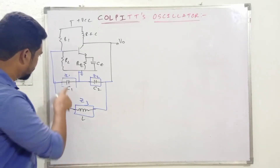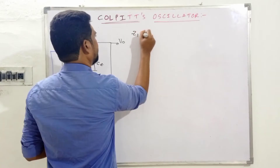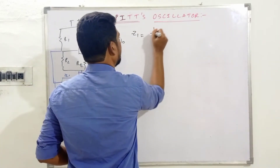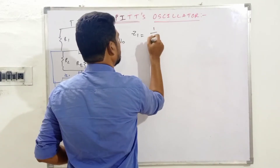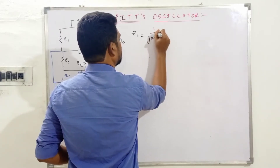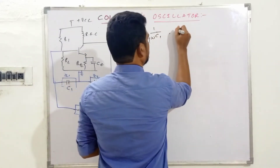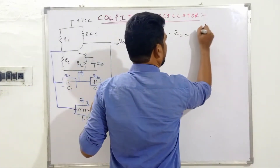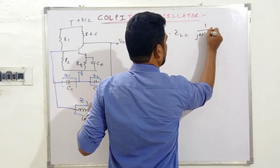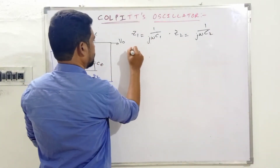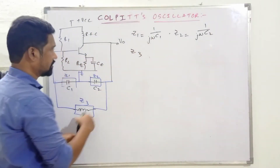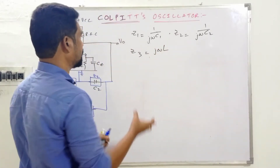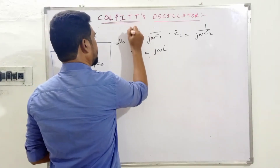Z1 is the impedance offered by capacitor C1, which is 1/(jωC1). Z2 is the impedance offered by capacitor C2, which is 1/(jωC2). And Z3 is the impedance offered by inductor L, which equals jωL. By substituting these into the general expression for LC oscillators, we can find the frequency of oscillations and the condition for sustained oscillations.